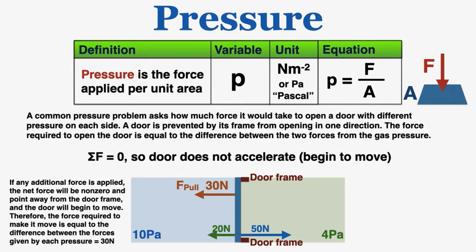So if we want to open the door, we have to apply a force of pull to at least completely cancel out the force of the door frame, and then add a little bit more to make the net force no longer zero. So if any additional force is applied from this point, the net force will be non-zero and point away from the door frame, and the door will begin to move. Therefore, the force required to make it move is equal to the difference between the forces given by each pressure, which here is equal to 30 newtons. If one pressure is pointing to open the door with 20 newtons, and the other pressure is pointing to keep the door closed with 50 newtons, altogether it would take an additional 30 newtons of pull or more to open the door, but 30 newtons is the minimum required.